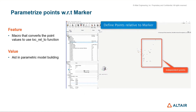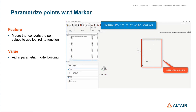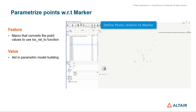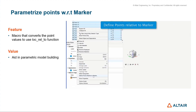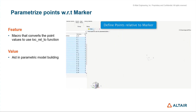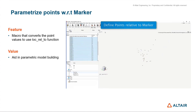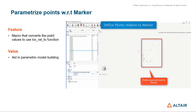A few other minor improvements. There is an option to convert existing points to have their definition relative to a marker. If you need points to follow a marker's position and orientation, select the points, right-click and use the provided options. The points will be redefined using the lock_rel_to function in the reference marker. When the marker is moved, the points move along with it — so if the marker is used as a variable in optimization, your model is parameterized to that marker.